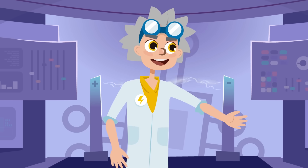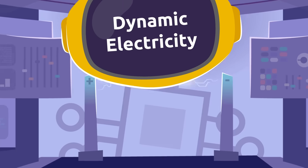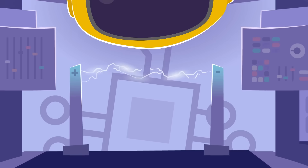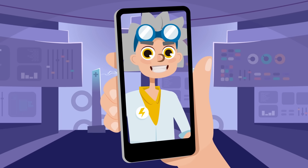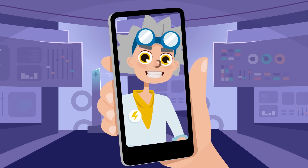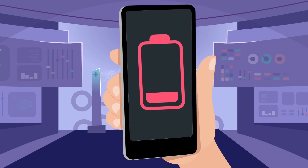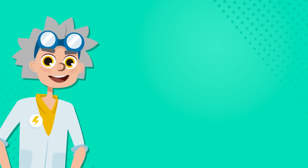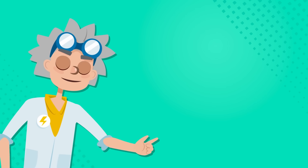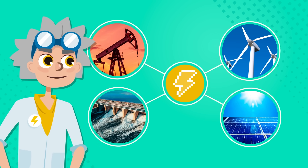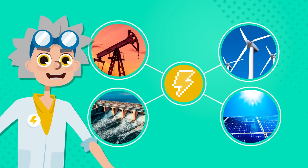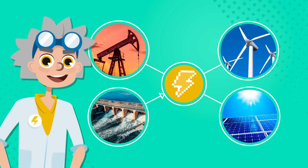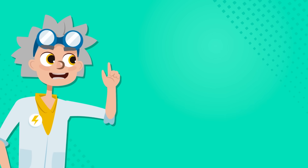Now that we know what static electricity is, let's look at dynamic electricity. Static electricity only lasts a short time — obviously we can't use it to charge our cell phones or turn on a lamp. We need to obtain a different type of electricity using the natural resources around us. The electricity we receive at home to run our electronic devices is called dynamic electricity.